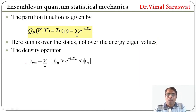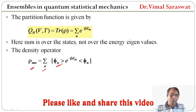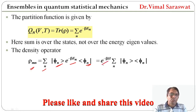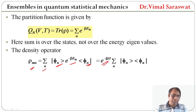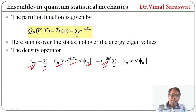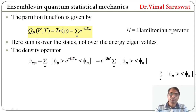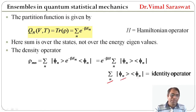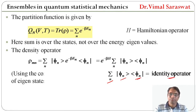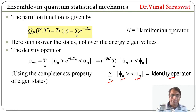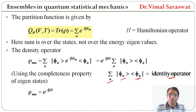The density operator is rho equal to sigma_n |phi_n> e^(minus beta E_n) <phi_n|, and this equals e^(minus beta H), where H is the Hamiltonian operator representing the energy. So rho equals e^(minus beta H) times sigma_n |phi_n><phi_n|, which equals the Hamiltonian operator times the identity operator, using the completeness property of eigenstates.